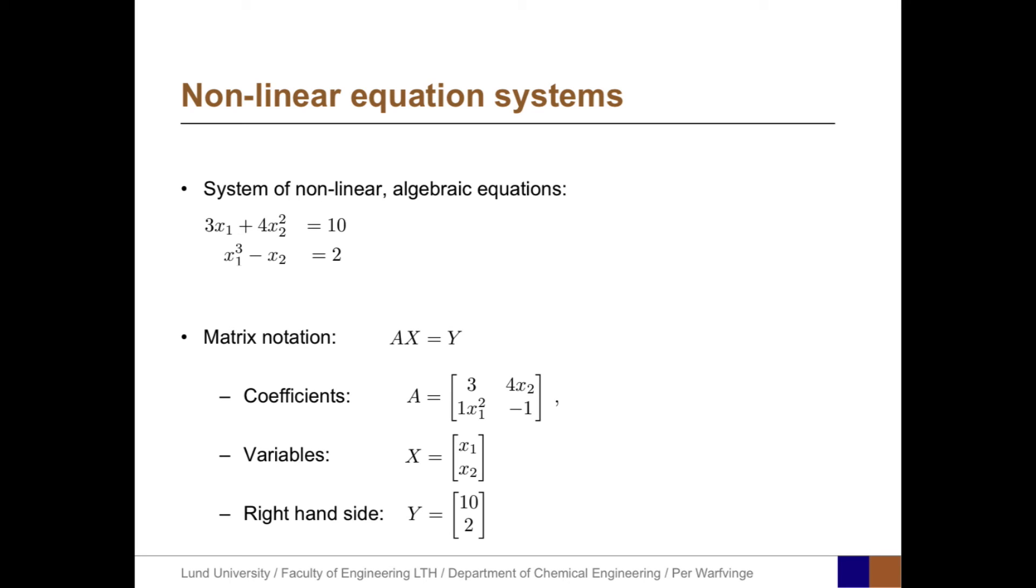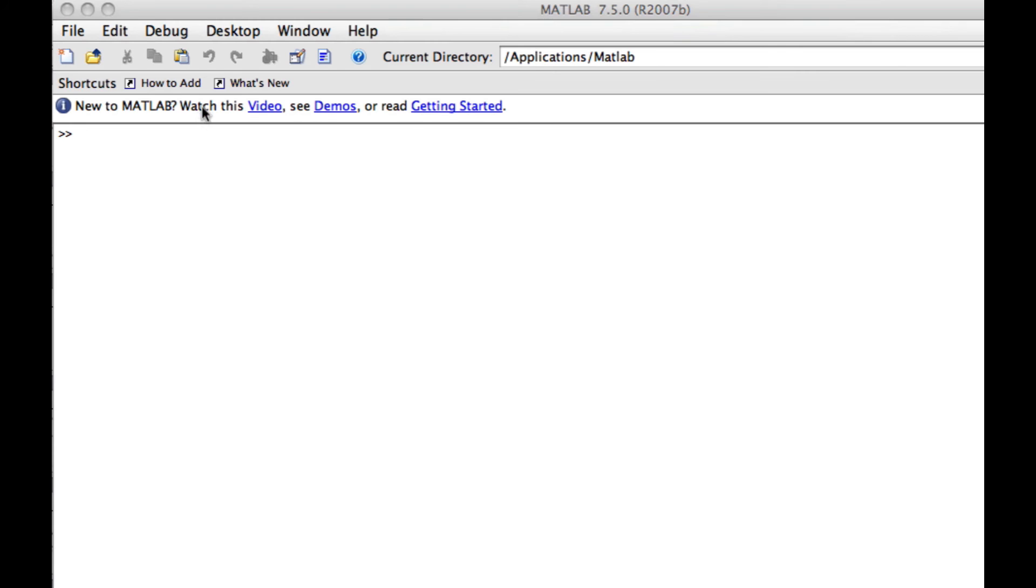This can also be written on the form Ax equals y, where the coefficient matrix, the first row is 3 and 4x2, while the second equation is represented as 1x1 squared minus 1. And the variables are x1 and x2, and the right-hand side of the equation is 10 and 2. So, in the coefficient matrix, we actually have the variables.